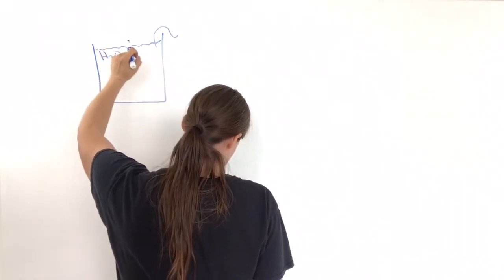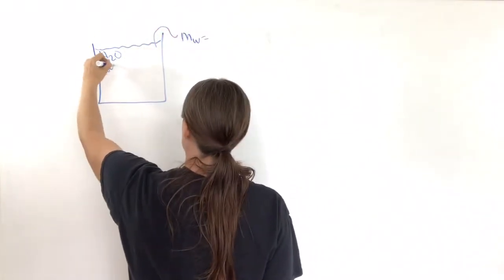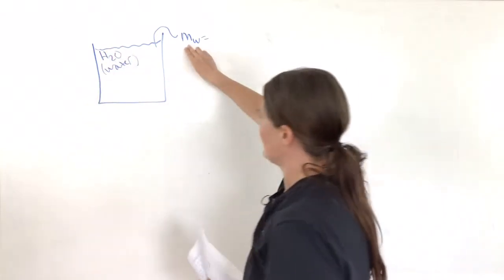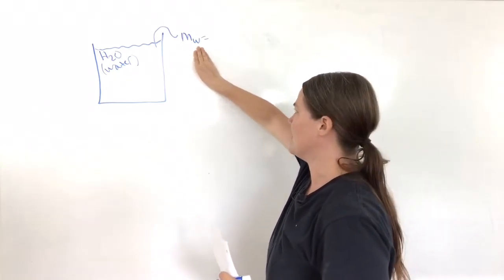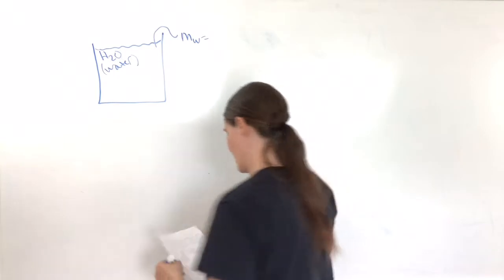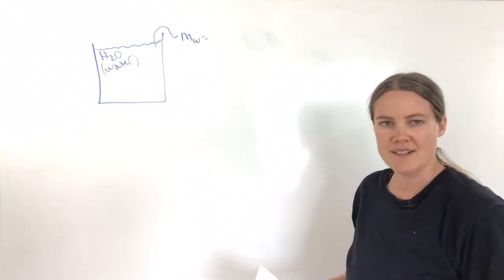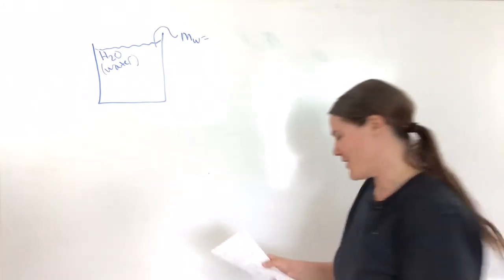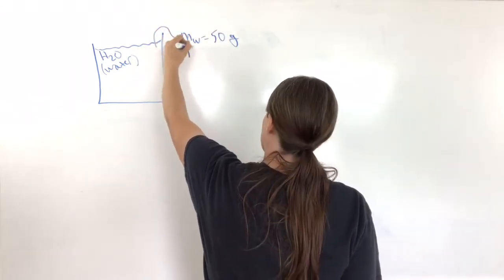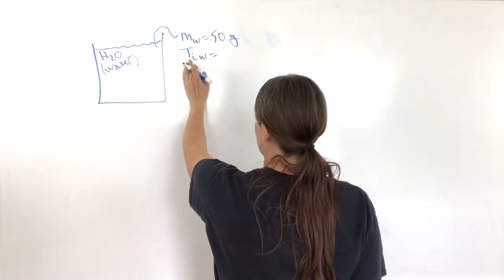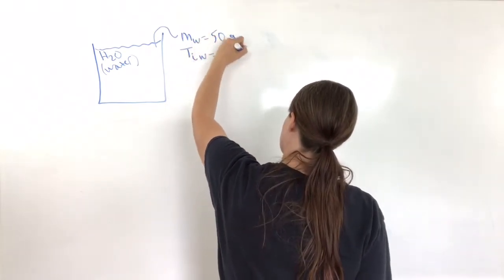So we have H2O — the water. I'm using M with a subscript W to indicate the mass of the water. You can use any symbol you want, just use ones that are easy to discern what your material is. The mass of the water is 50 grams, and the initial temperature of the water is 26 degrees Celsius.